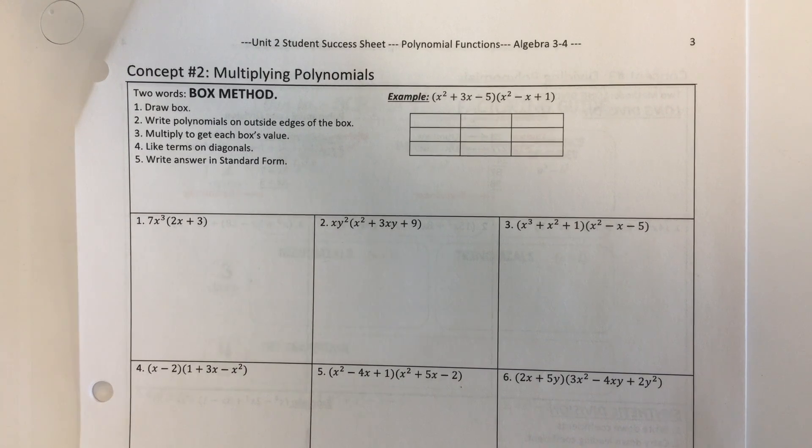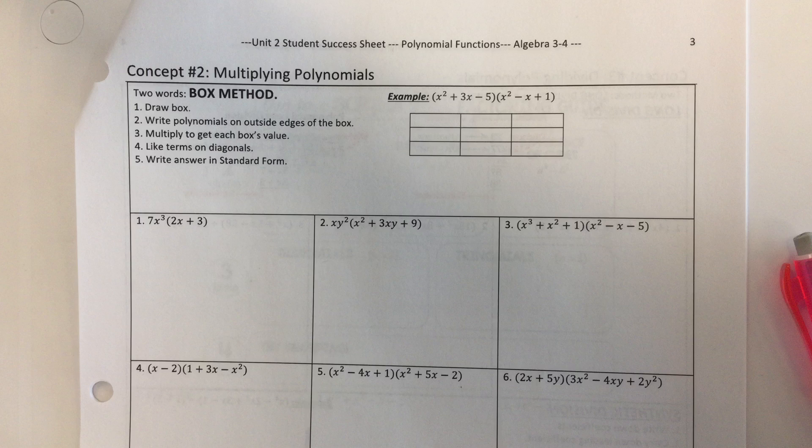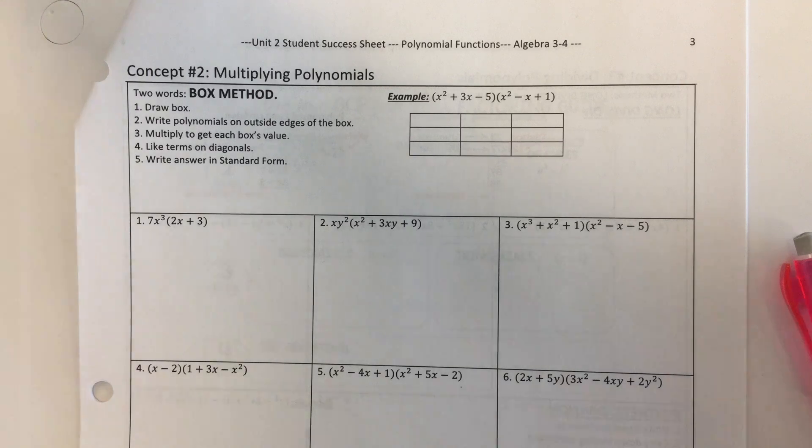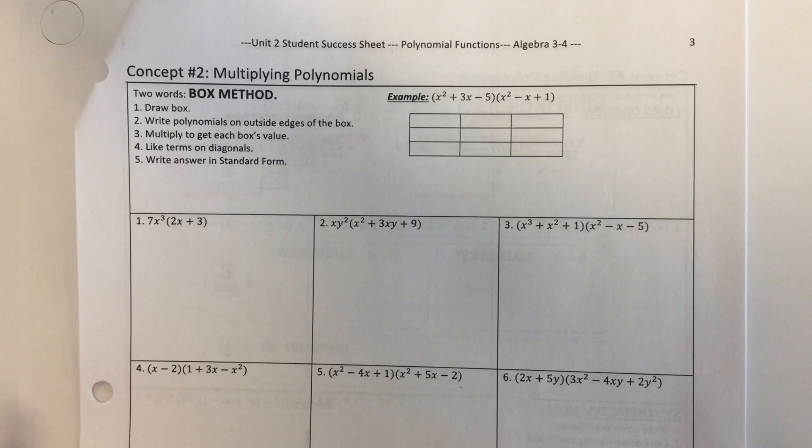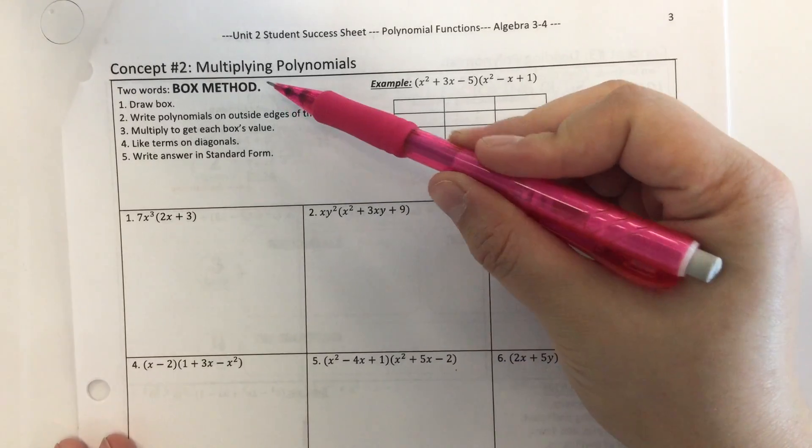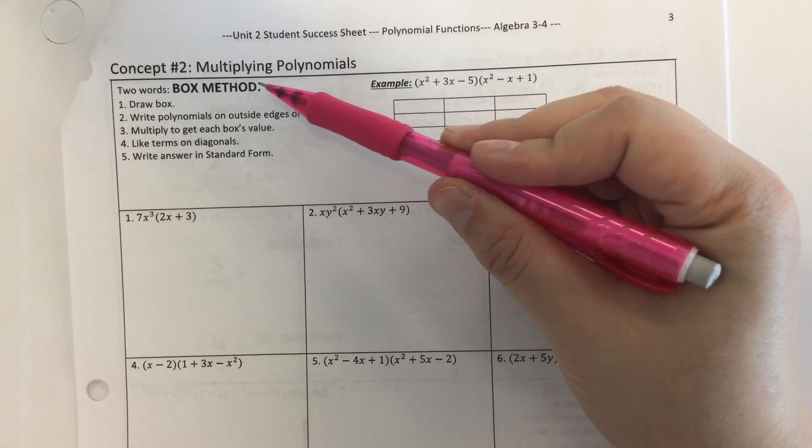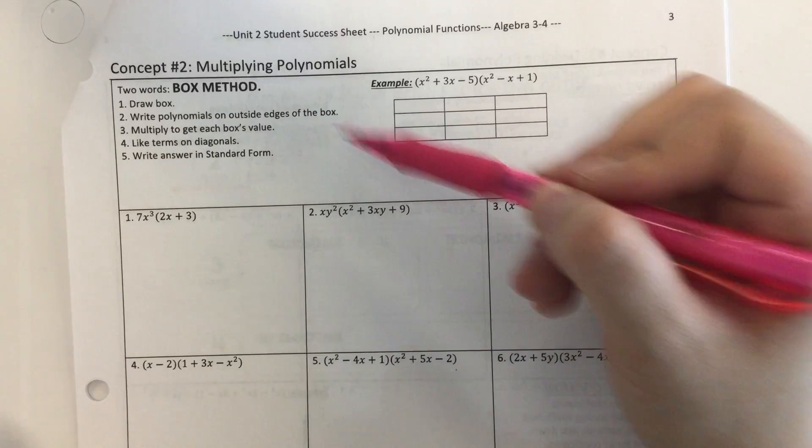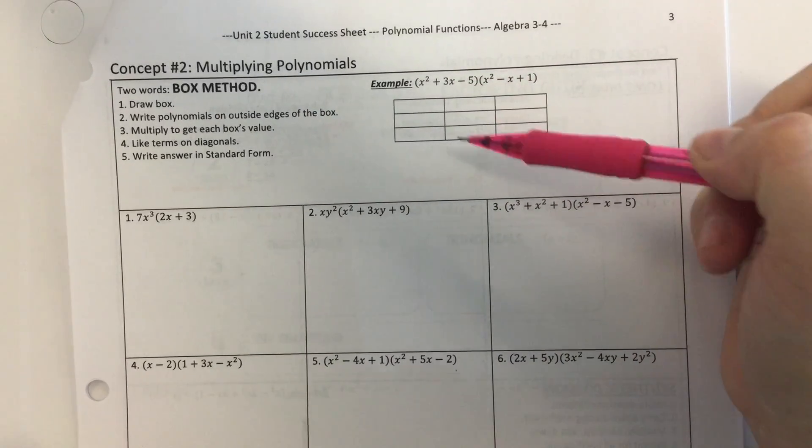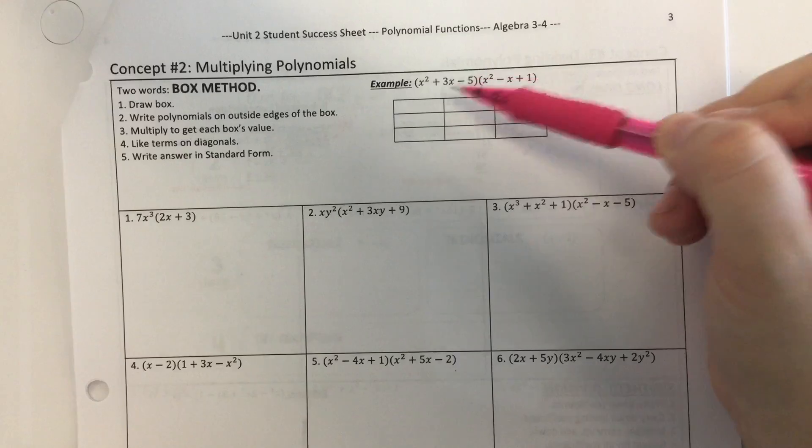Alright, concept two, multiplying polynomials. These get a little bit more involved than multiplying complex numbers because complex numbers always have two terms. With polynomials you can have multiple terms, you can have 2, 3, 4, 5, however many they want. So the easiest way to multiply polynomials is by using the box method. I'm going to show you how to use the box method to organize and help you figure out the answer when you multiply two polynomials.